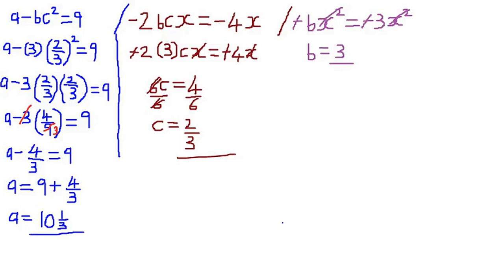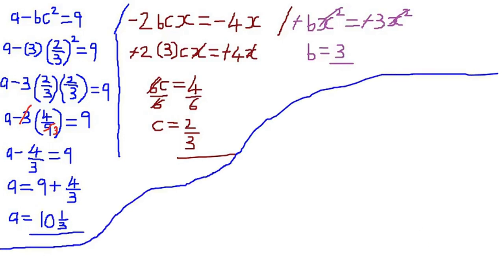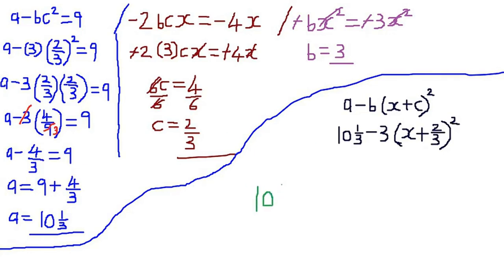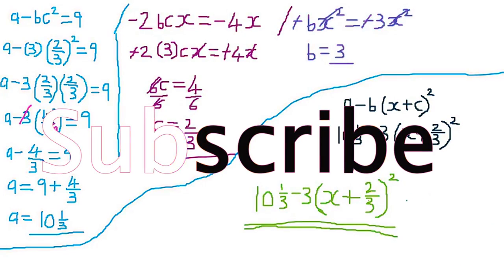Now we can replace the values. We are given that we should express it in the form a minus b, open brackets, x plus c, close brackets, squared. The value of a is 10 and 1 over 3, b is 3, and c is 2 over 3. Therefore, the answer is: 10 and 1 over 3, minus 3, open brackets, x plus 2 over 3, close brackets, squared. This is how you are expected to answer.